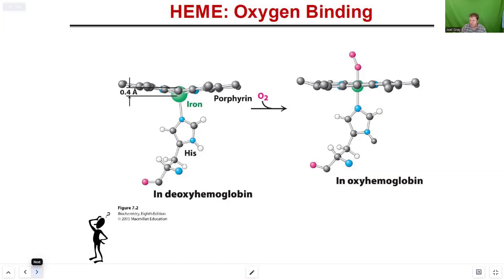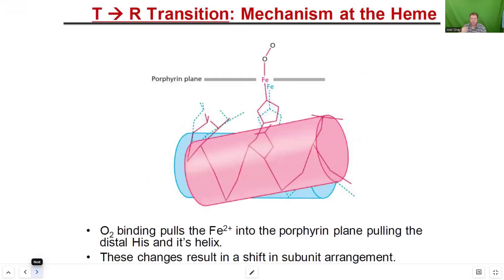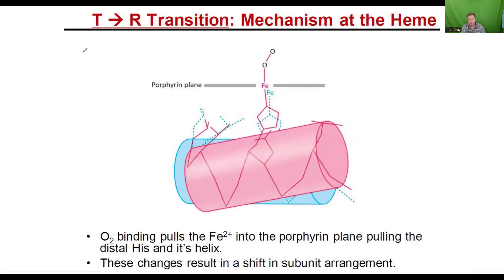The significance of all this isn't just that 0.4 angstrom movements cause a ripple effect. The way this is illustrated best is with these proteins. What we see here now is the porphyrin ring. What's depicted in blue is an alpha helix with the lower histidine residue.